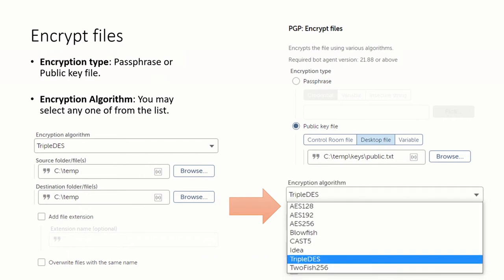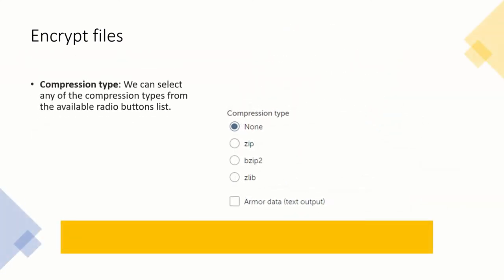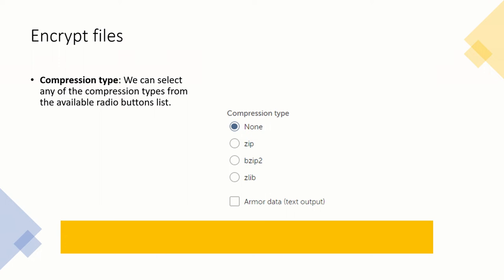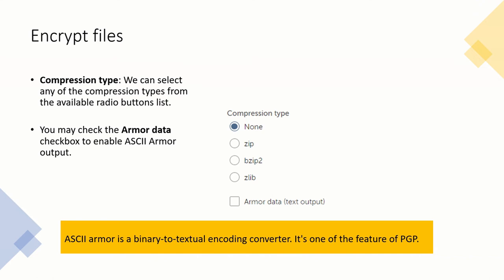You can choose the encryption algorithm for encrypting the file. Available algorithms include AES-128, Blowfish, and Triple DES. For this example we'll be using Triple DES. You also specify the source file and destination folder — the source is the file to encrypt and the destination is where the encrypted file will be stored. You can select a compression type such as ZIP, ZLib, or None, and you can check the 'Armored Data' checkbox to enable ASCII armor, which is a binary-to-textual encoding converter.